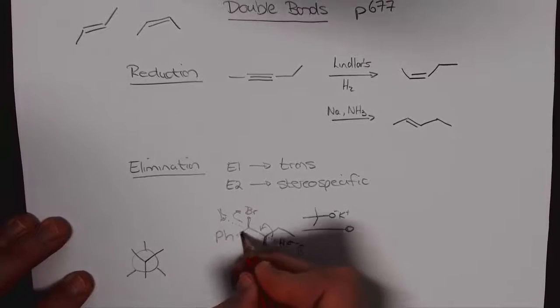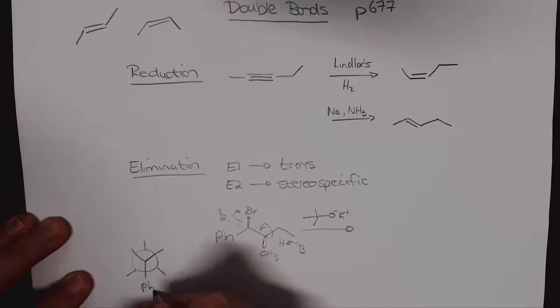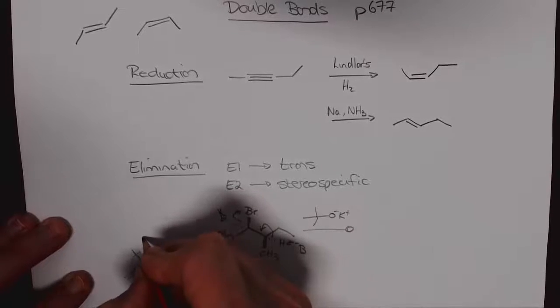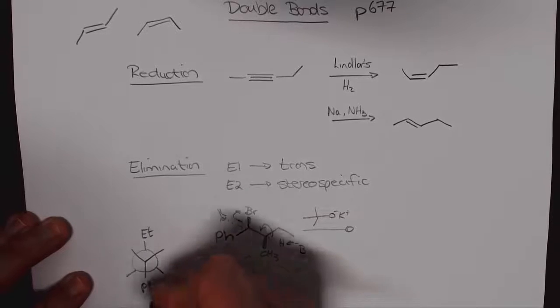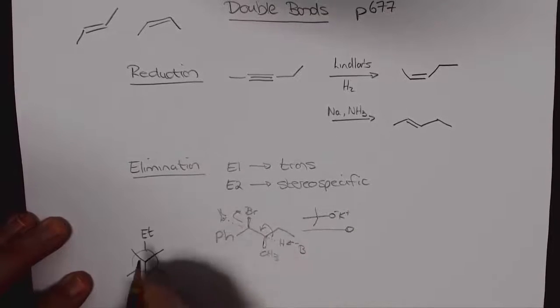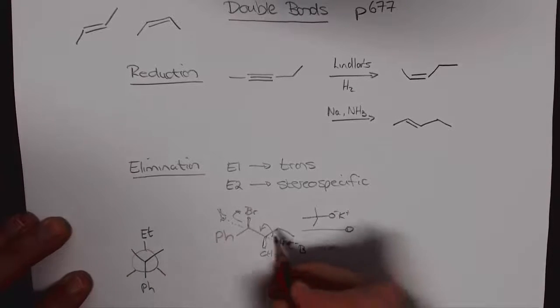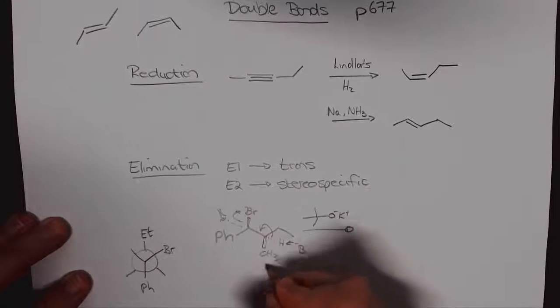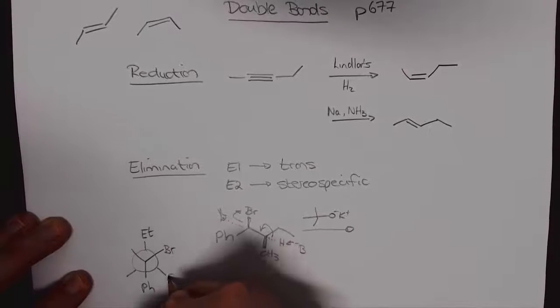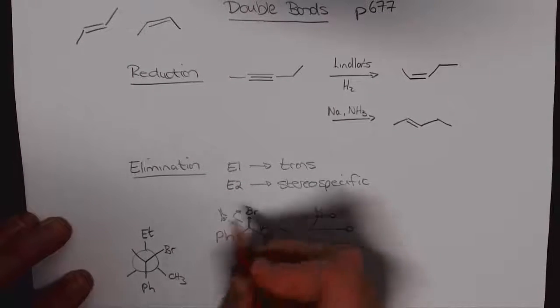We draw out the Newman projection and here we see the phenyl group is as we're looking with our eye, the phenyl is pointing straight down which is over there. On the other side the ethyl group is facing directly up. This is the plane of our paper so everything on the right hand side is facing up so when we look at this the bromine is up so it's over here on this carbon at the back, the CH3 is up it's over there.